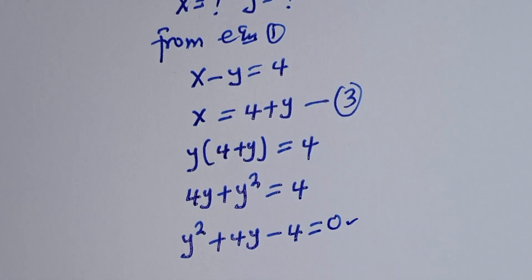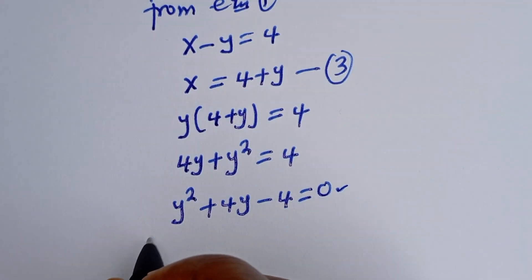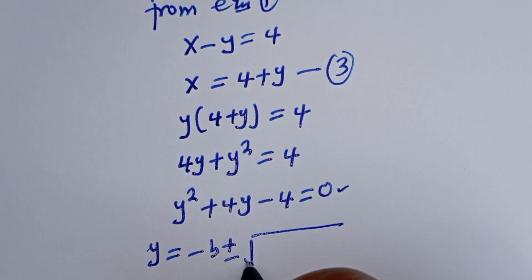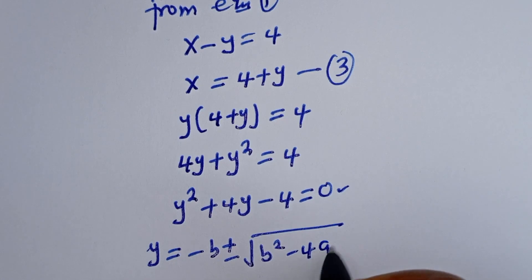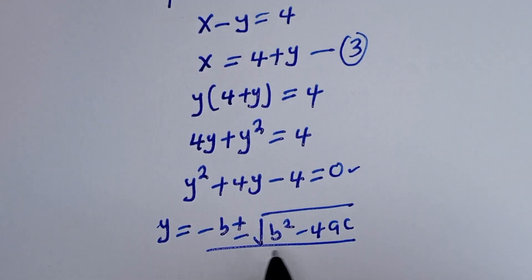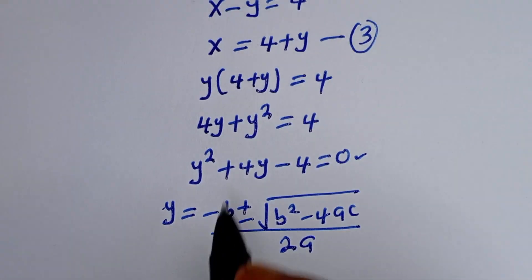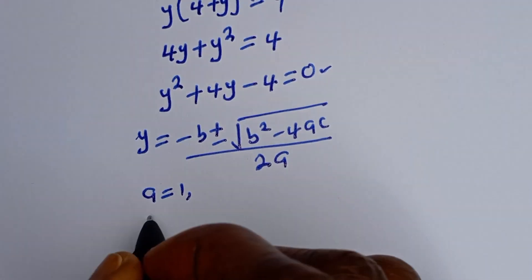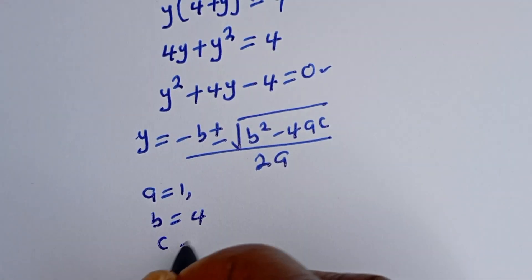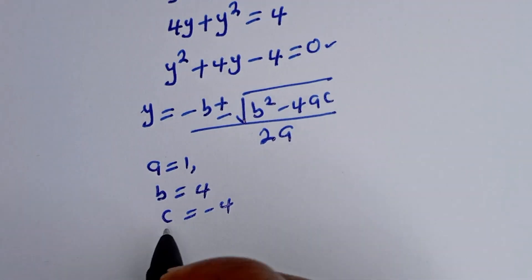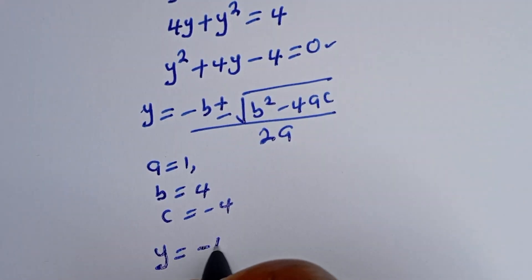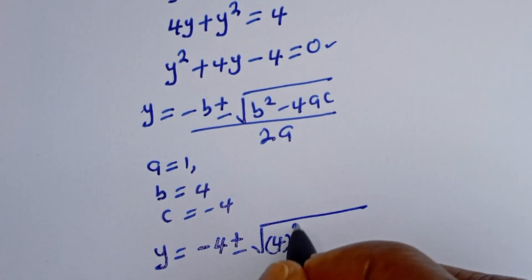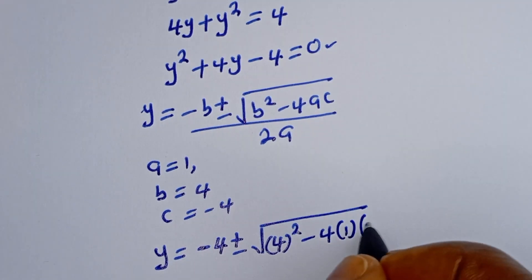This is a quadratic equation which can be solved using the quadratic general formula. From the quadratic formula, Y is equal to minus B plus or minus square root of B squared minus 4AC, over 2A. From this equation, A is equal to 1, B is equal to 4, C is equal to minus 4. So Y is equal to minus 4 plus or minus square root of 4 squared minus 4 multiplied by 1 multiplied by minus 4.